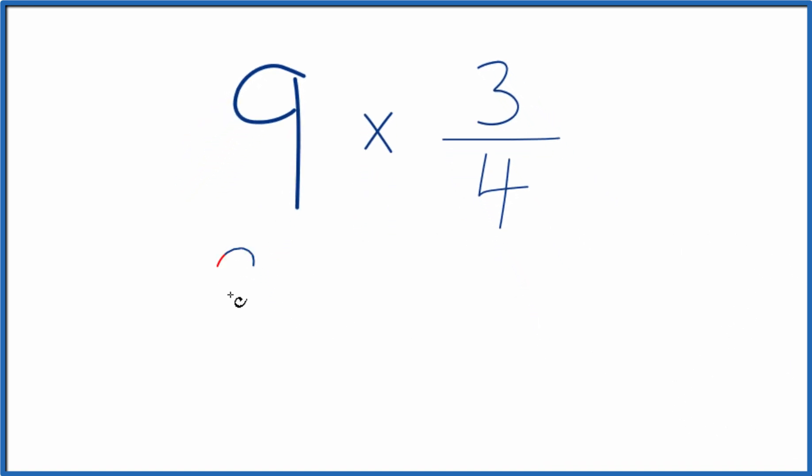Another way to do it, you could take 9 and call that 9 over 1. Because 9 divided by 1 is still 9. We're just dividing by 1. Now we have a fraction. We can multiply that times 3 fourths.